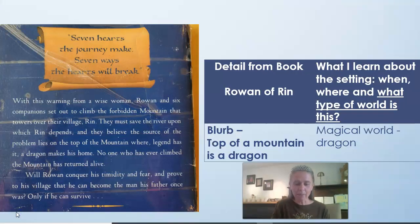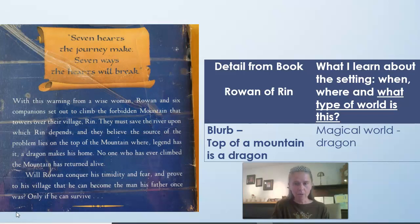Then I'm going to take a look at the back of the book — that's called the blurb. It says: 'With seven hearts the journey make, seven ways the hearts will break.' With this warning from a wise woman, Rowan and his six companions set out to climb the forbidden mountain that towers over their village, Wrynn. They must save the river upon which Wrynn depends, and they believe the source of the problem lies at the top of the mountain where, legend has it, a dragon makes his home. With a mountain and a dragon at the top — this is definitely a magical world.